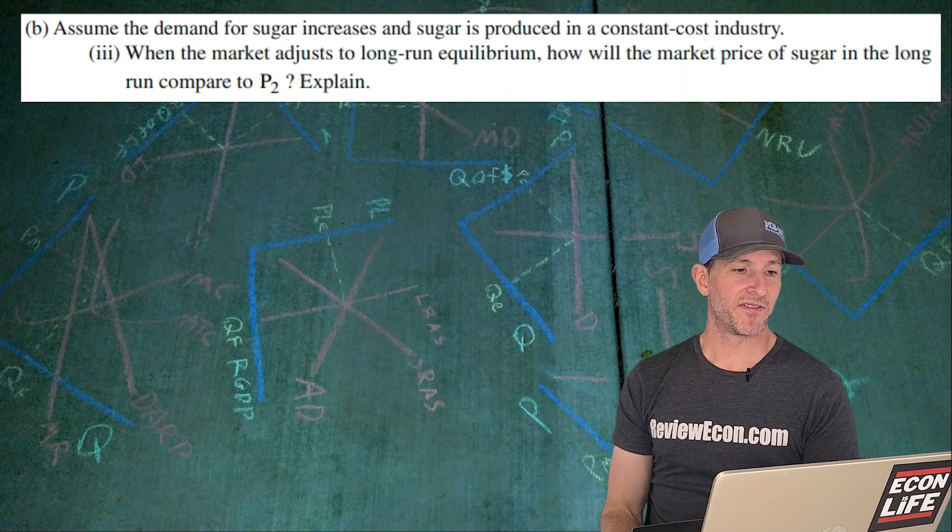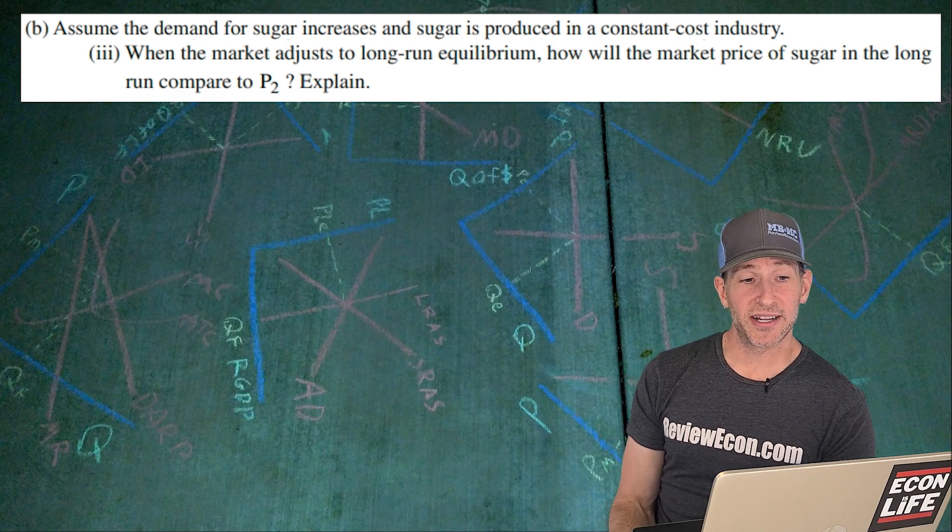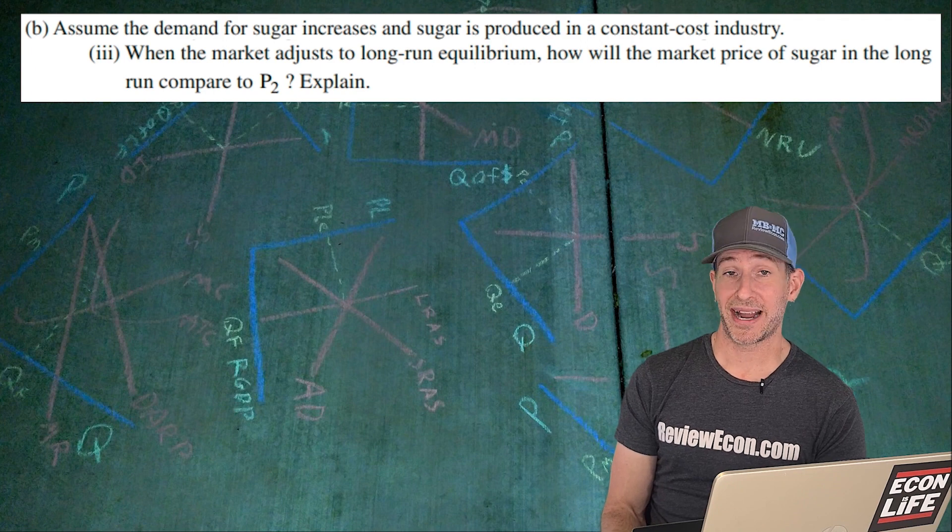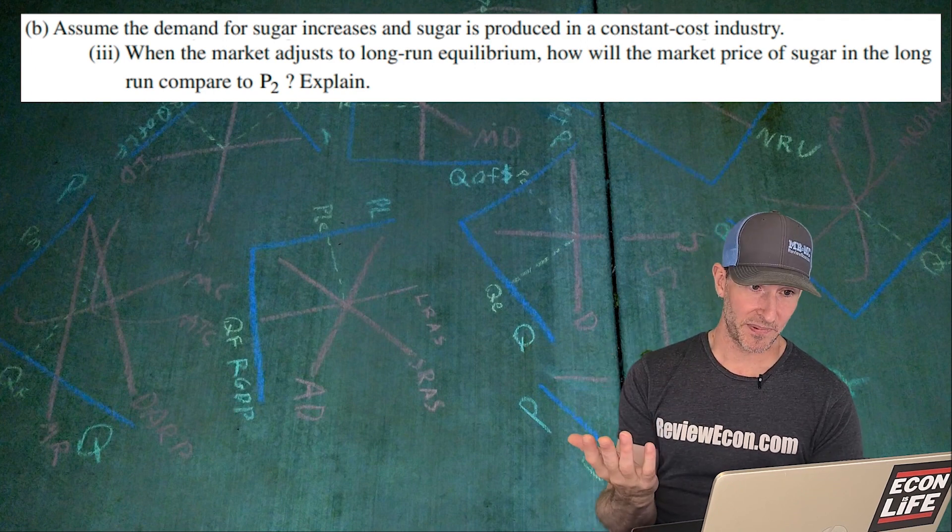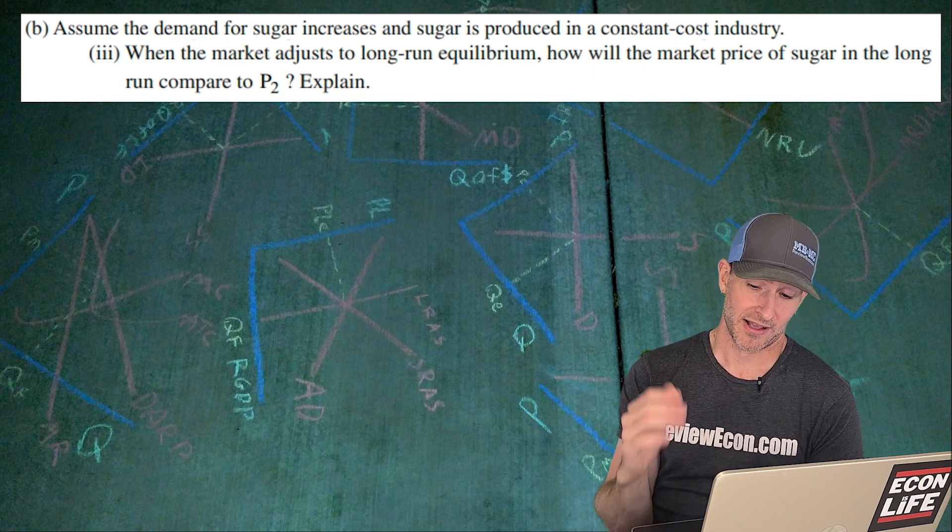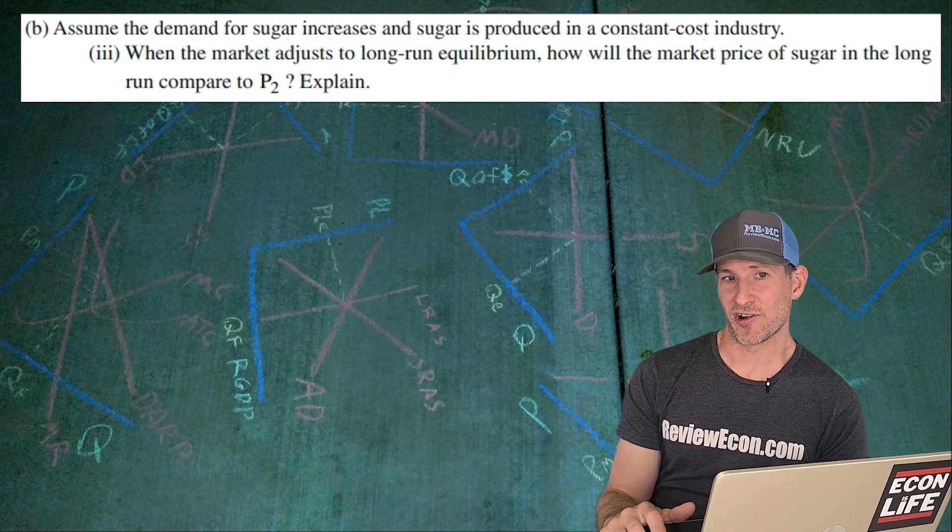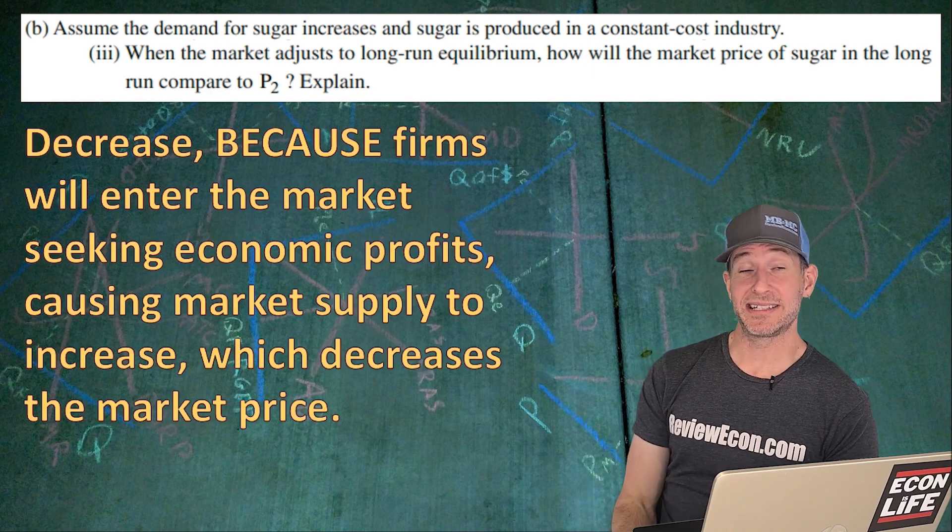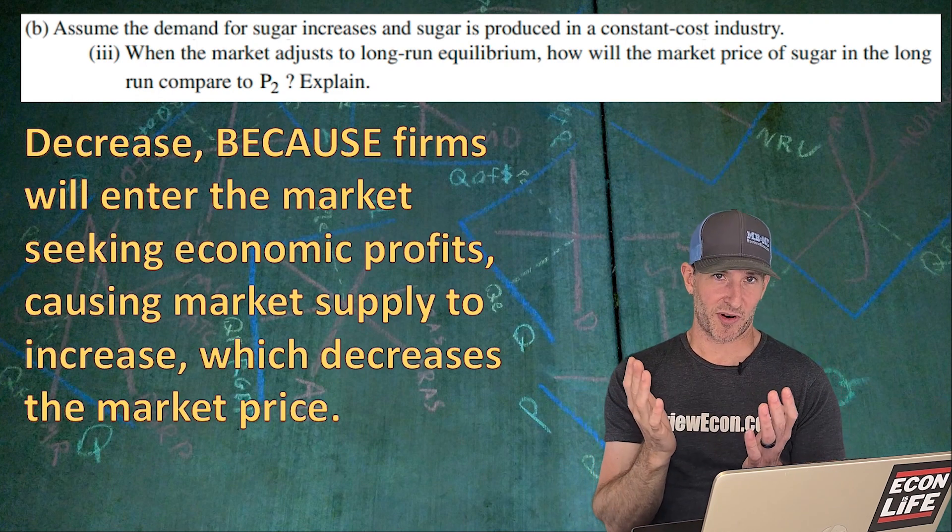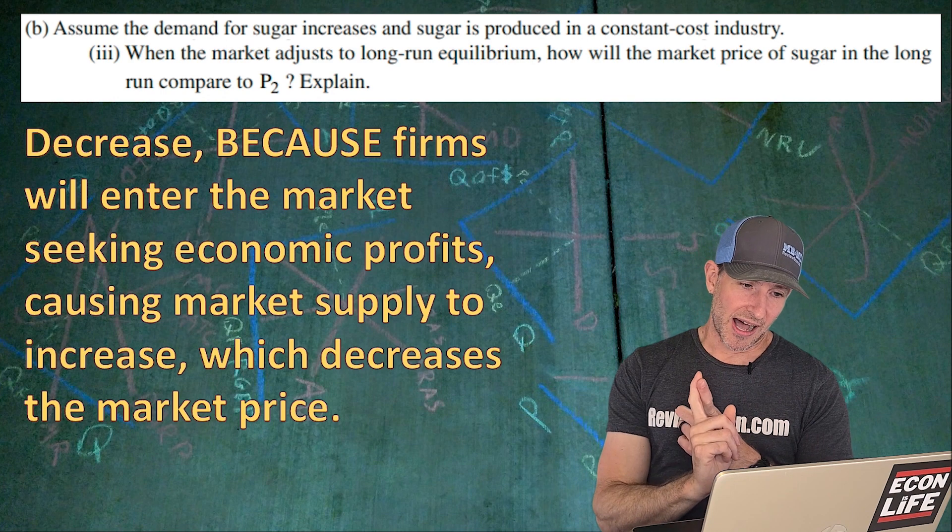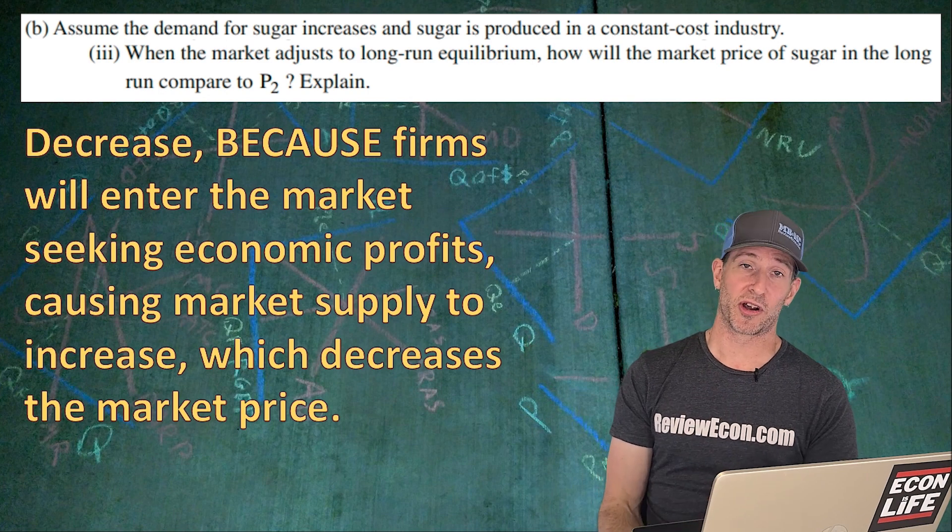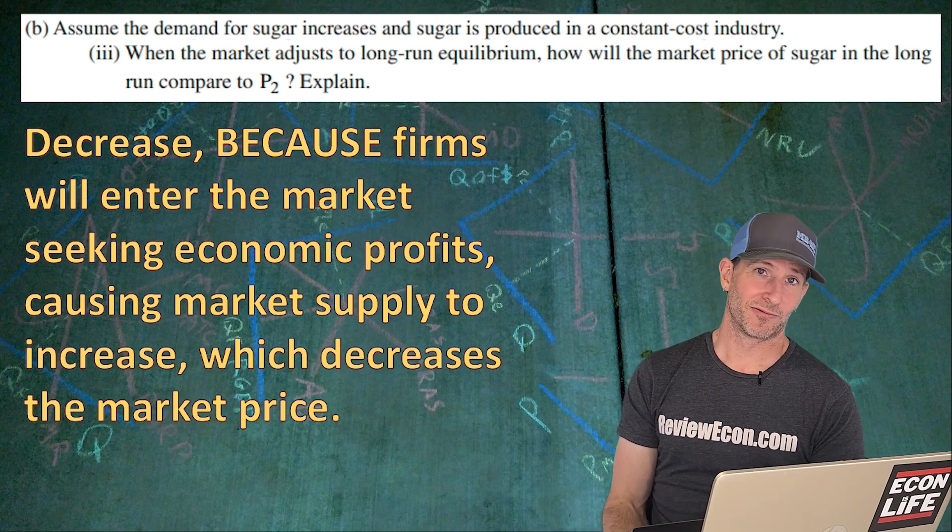On to the next part of Part B3, when the market adjusts to long-run equilibrium, how will the market price of sugar in the long run compare to P2? The price has gone up now, and it's actually going to go back down to where it was prior because the firm has to go back to breaking even in the long run. Here's my answer. It's going to decrease because firms will enter the market seeking economic profits. I believe just enter the market will be enough, which is going to make the market supply curve increase or shift to the right, and that will decrease the market price back to where it was before, really.